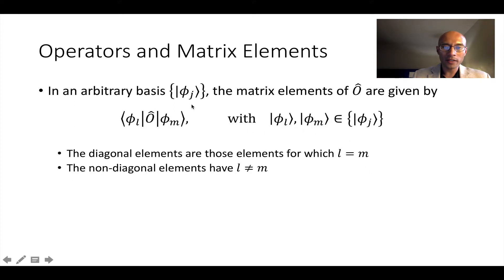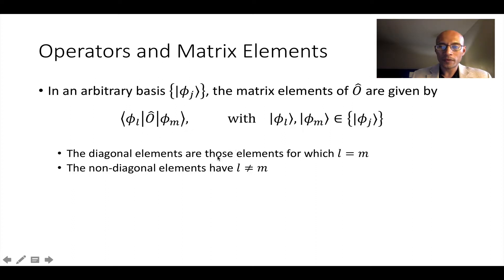More generally, we don't have to use the elementary basis. We can use any vectors or any kets that we want and select matrix elements in any basis. In general, if we have some operator O and you put a bra and a ket around it, you're selecting a matrix element. If the bra and the ket correspond to one another — that is, if L equals M — then we refer to that as a diagonal element. Non-diagonal elements, of course, have L not equal to M.